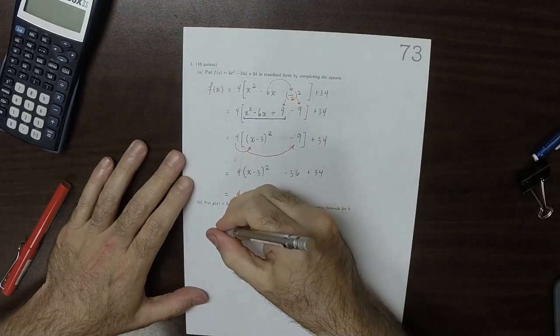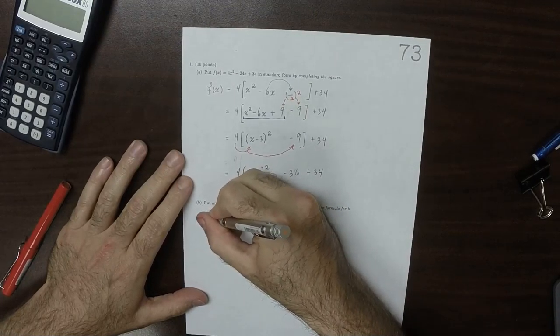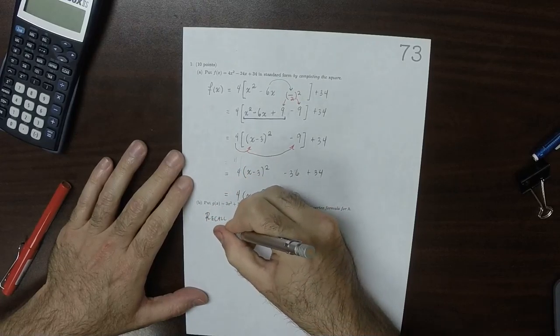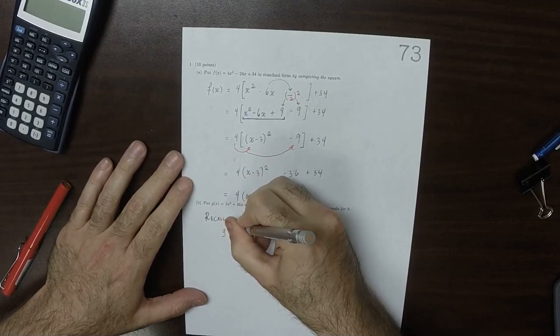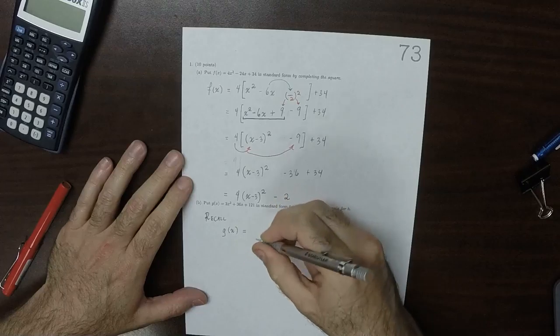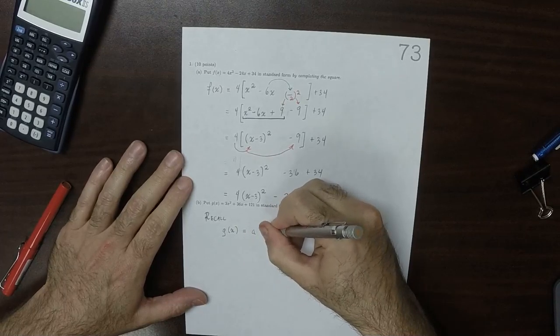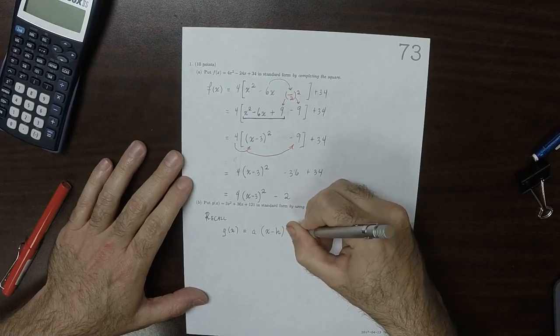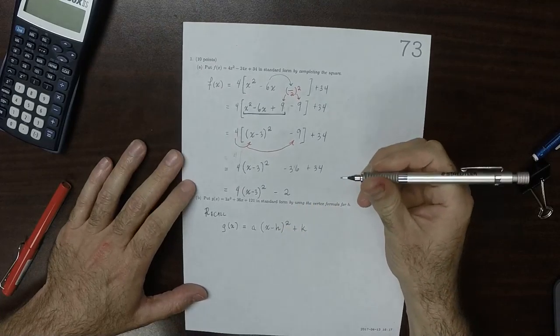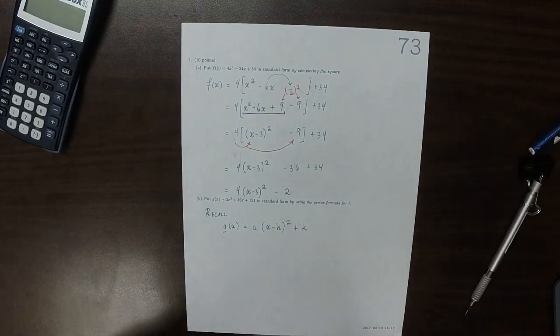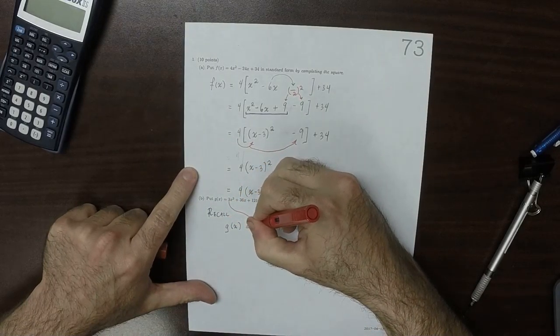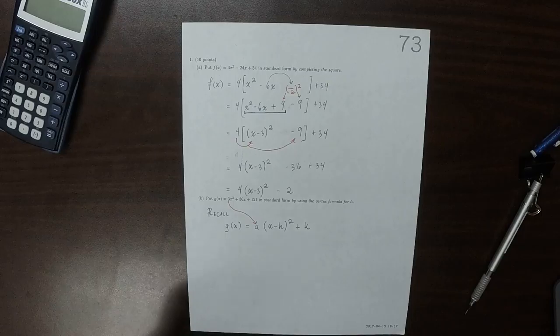So now the trick is to recall that the standard form is going to be g of x equals a multiplied by x minus h squared, and then plus k. So a is going to be this number. For this g, a is 3.